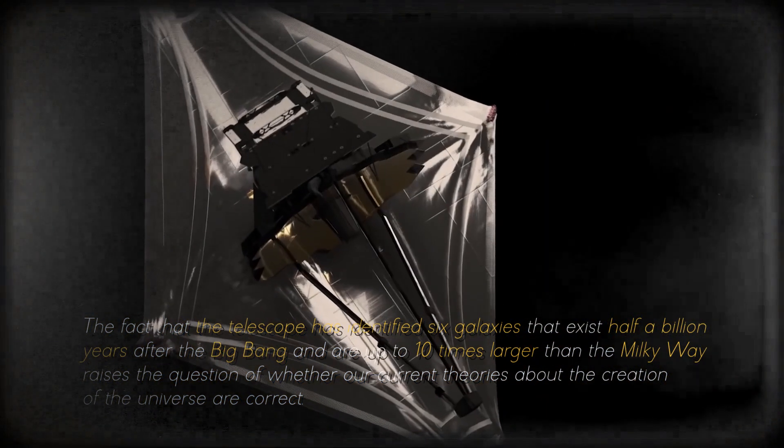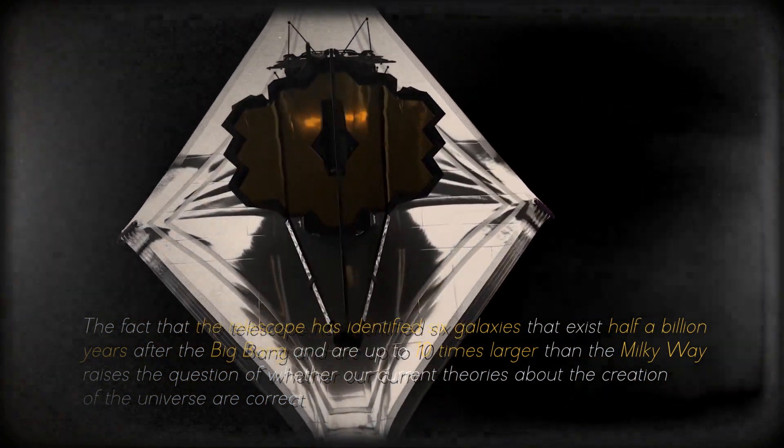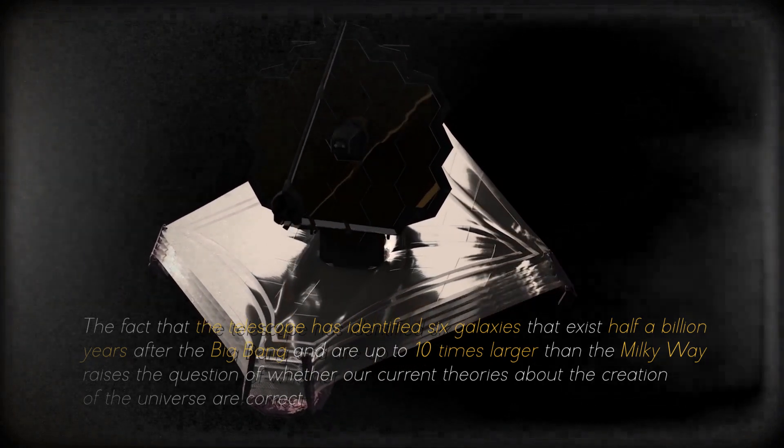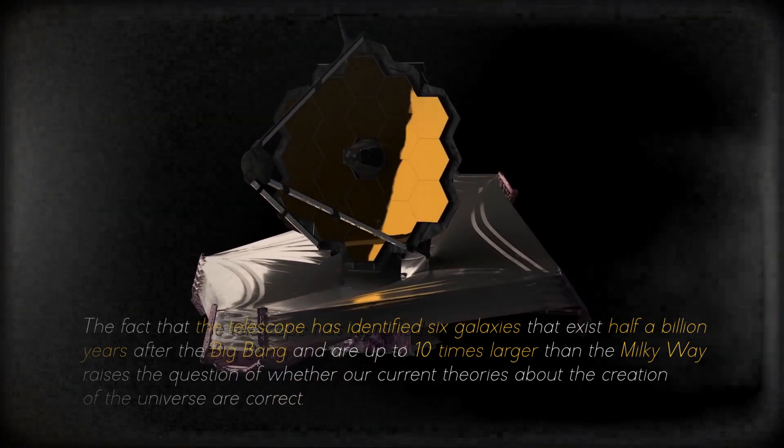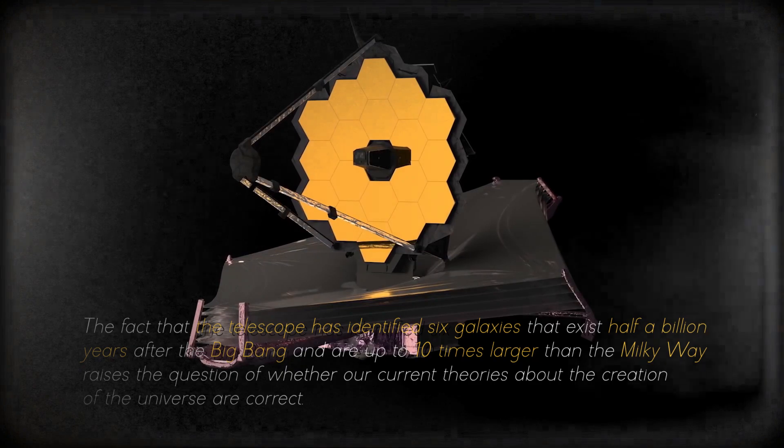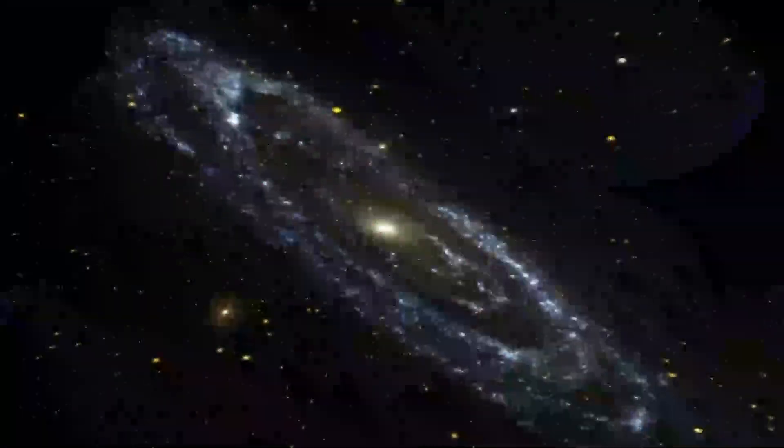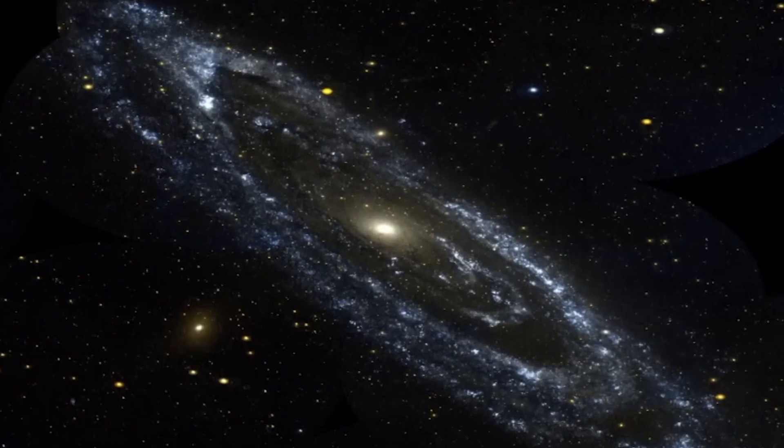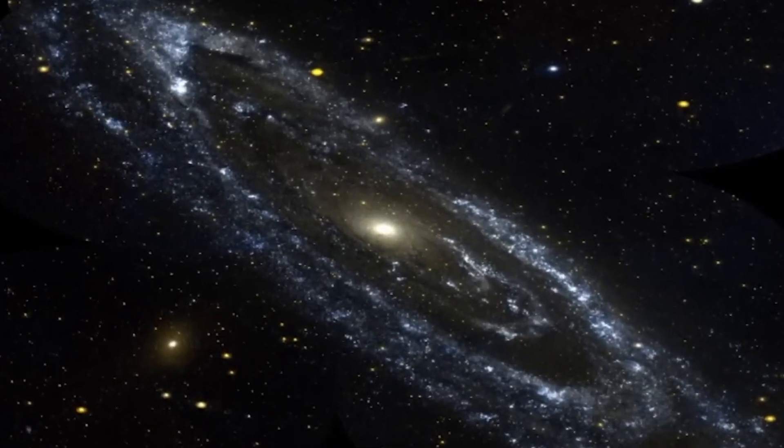The fact that the telescope has identified six galaxies that exist half a billion years after the Big Bang and are up to ten times larger than the Milky Way raises the question of whether our current theories about the creation of the universe are correct. Kaku explained that it takes billions of years to create a galaxy like the Milky Way, so it is strange to find such large, young, primordial galaxies. This discovery may require us to revise and rewrite textbooks on the beginning of the universe.